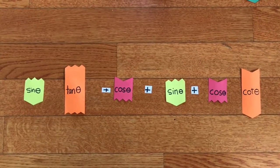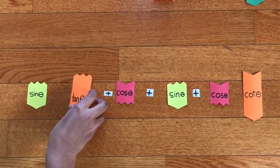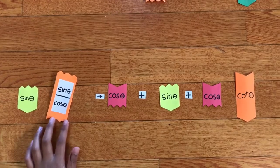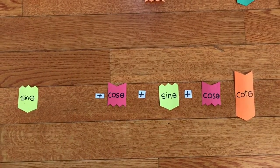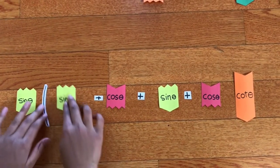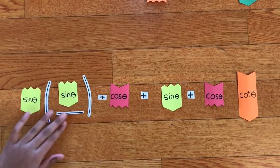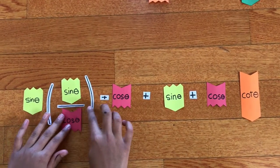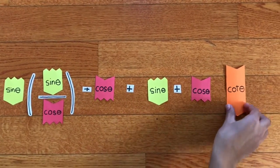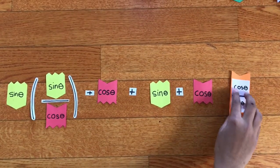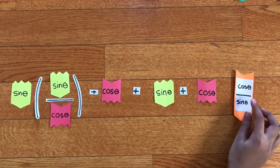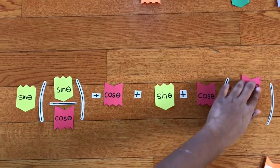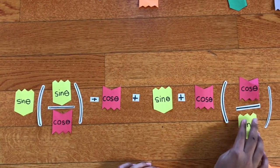Using the identity tangent theta = sine theta / cosine theta, we replace tangent theta with sine theta over cosine theta. And using the formula cotangent theta = cosine theta / sine theta, we replace cotangent theta with cosine theta over sine theta.